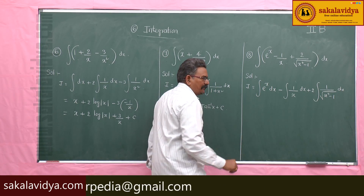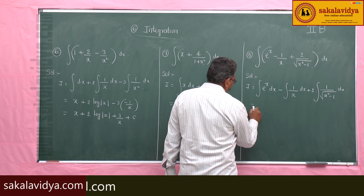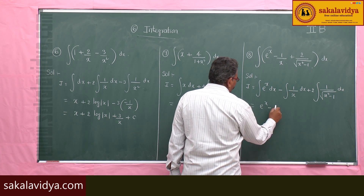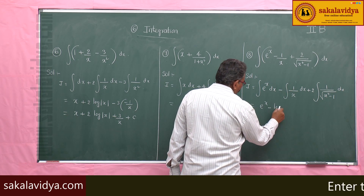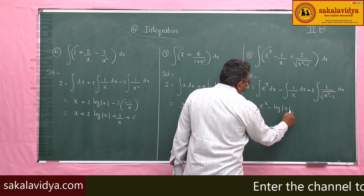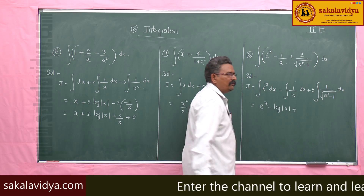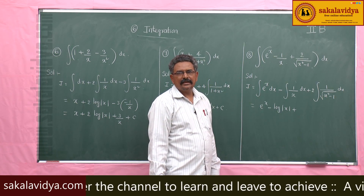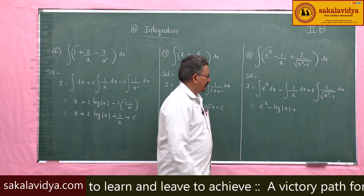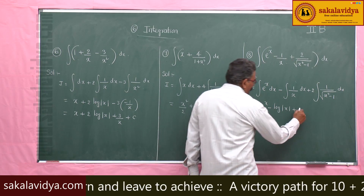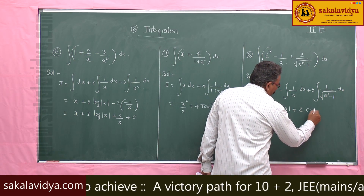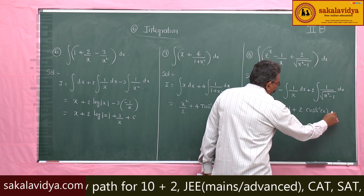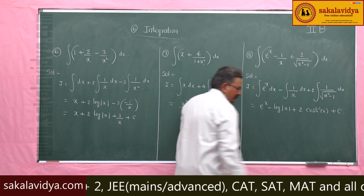The derivative of e power x is e power x, so integral of e power x is also e power x. Minus integral of 1 by x dx is log mod x. The integral of 1 by root of x square minus 1 dx is cosh inverse x. So the answer is e power x minus log mod x plus 2 cosh inverse x plus constant of integration.